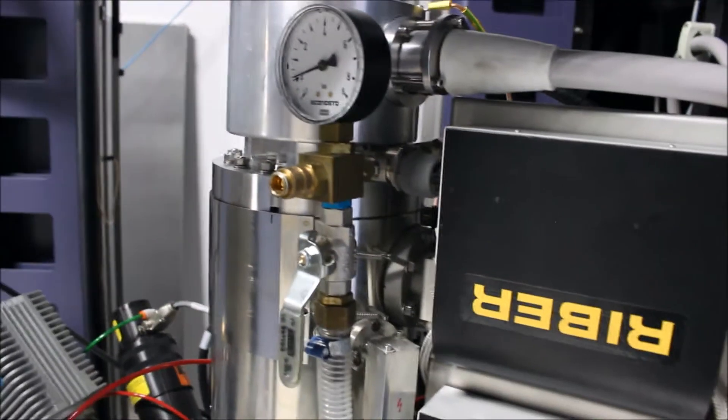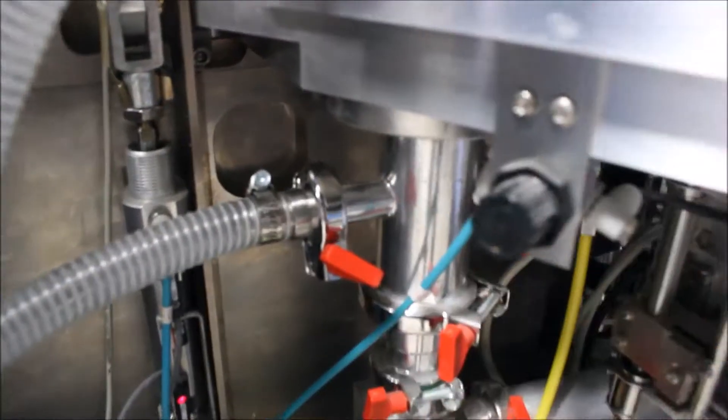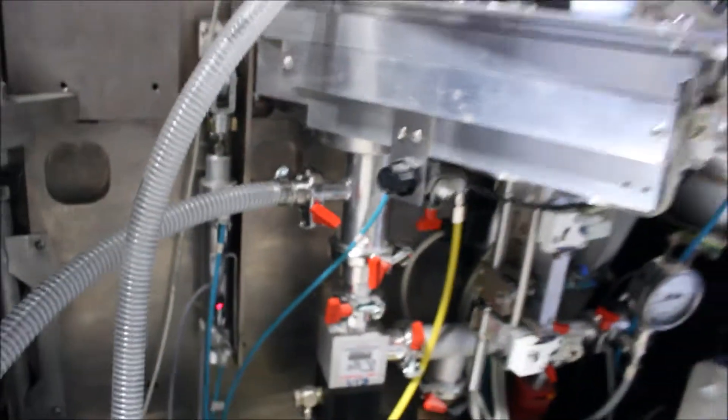We have the vacuum line—this is the vacuum line—connected to the little vacuum connector on the load lock underneath the load lock.